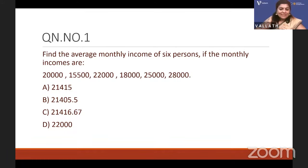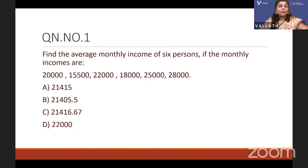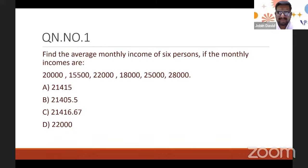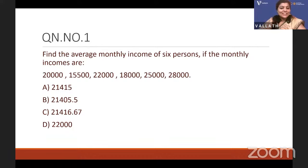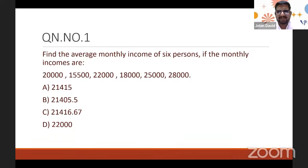First question: Find the average monthly income of six persons. Imagine they are all in one family — it is good to plan our lives if we know the average. The six incomes are: 20,000, 15,500, 22,000, 18,000, 25,000, and 28,000 rupees.